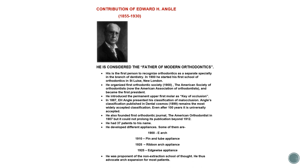The upper permanent first molar is kept fixed as the key of occlusion, determining whether the occlusion is Class I, Class II, or Class III. In 1887, Angle presented his classification of malocclusion — the Angle's classification — and even after more than 100 years, this classification is still the standard used in clinics and colleges.